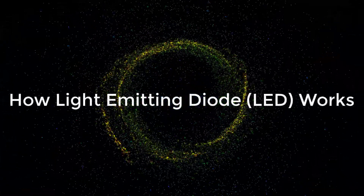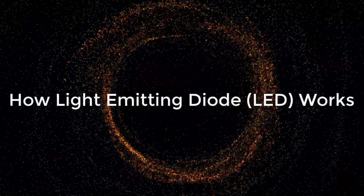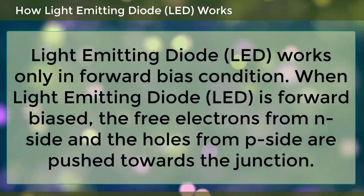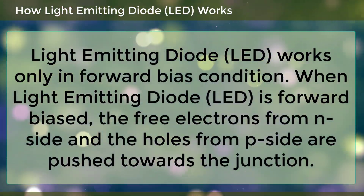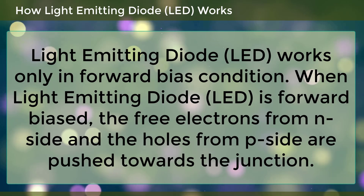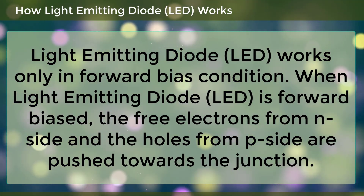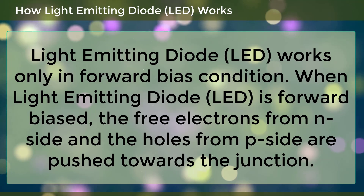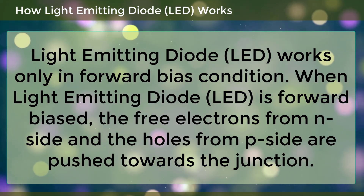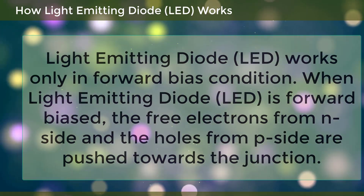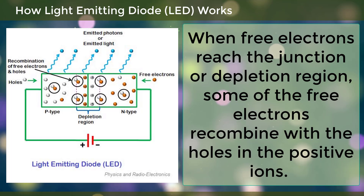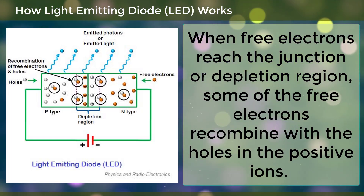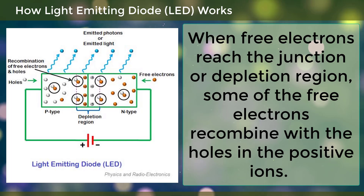LEDs work only in forward biased condition. When an LED is forward biased, the free electrons from the N side and the holes from the P side are pushed towards the junction. When free electrons reach the junction or depletion region, some of the free electrons recombine with the holes in the positive ions.